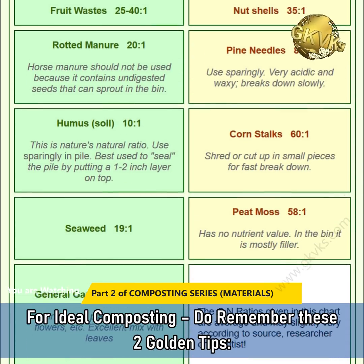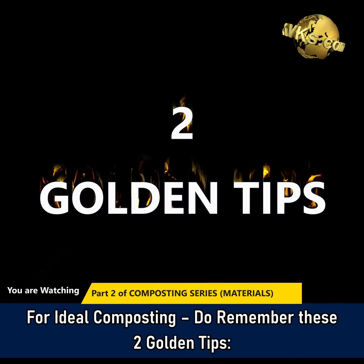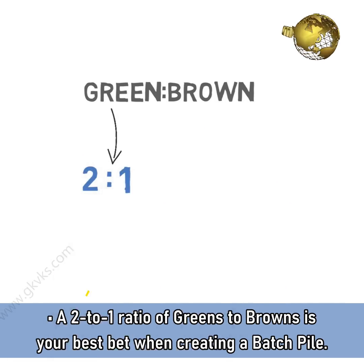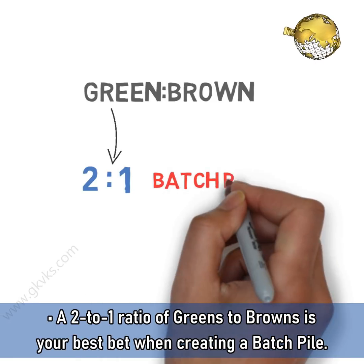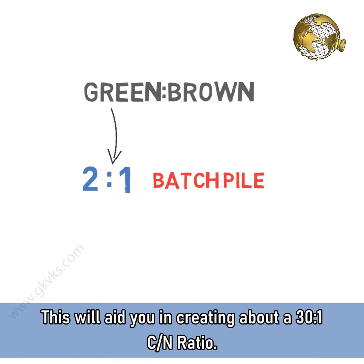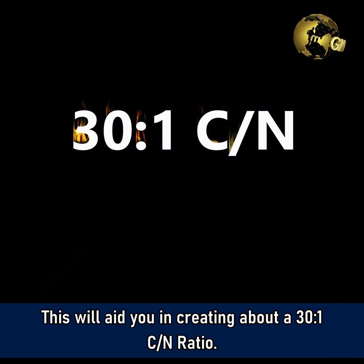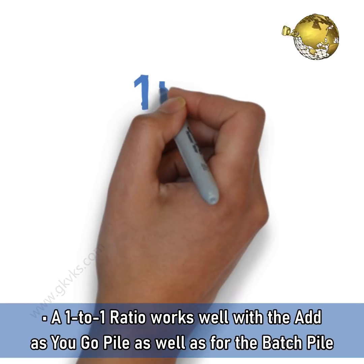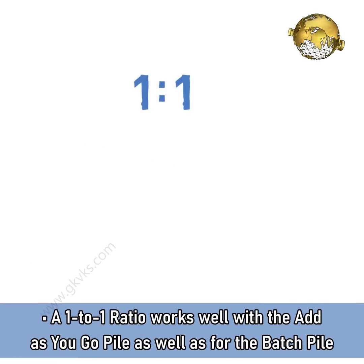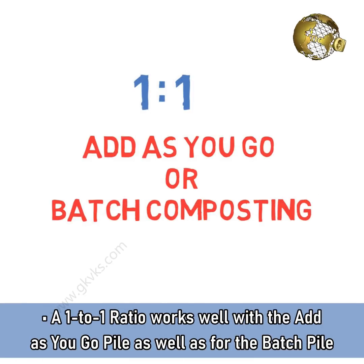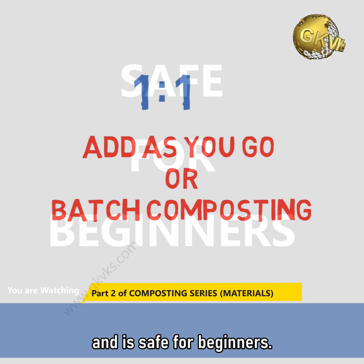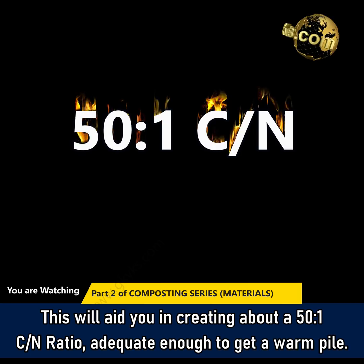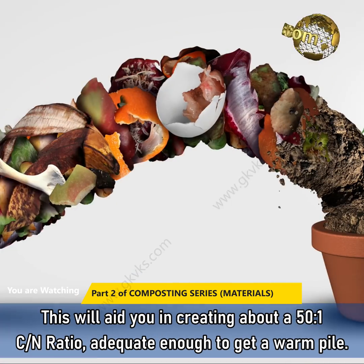For ideal composting, remember these two golden tips. A 2-to-1 ratio of greens to browns is your best bet when creating a batch pile — this will help create about a 30-to-1 CN ratio, adequate to get a hot pile. A 1-to-1 ratio works well with an add-as-you-go pile as well as a batch pile, and is safe for beginners — this will create about a 50-to-1 CN ratio, adequate to get a warm pile.